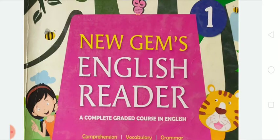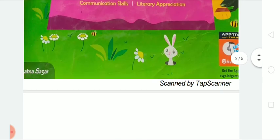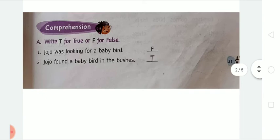Hello dear students, welcome back to online classes. This is your subject teacher of English from LPM Public School, which is situated in Gholabachar, Gorodpur. Today's video I am going to explain the exercises of chapter number 5. In my previous video I have already explained the chapter, and now today's video I am going to explain the exercises. So without wasting time, first of all take out your New Chance English Reader book and open chapter number 5, that is Jojo's Pet.